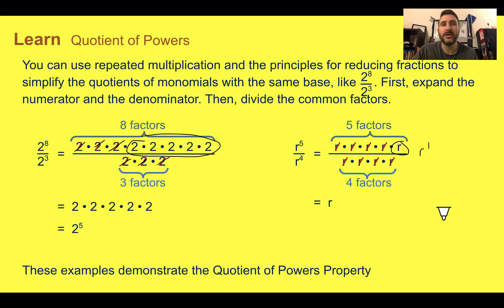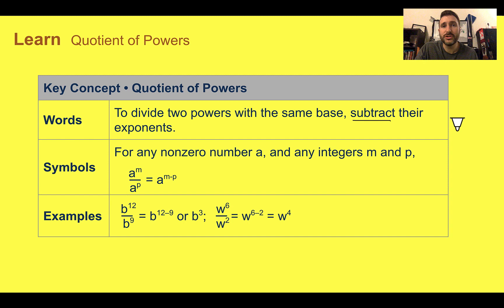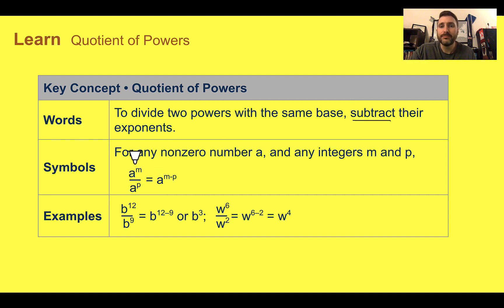Both of these show the quotient of powers property. The key concept is: if you have 2 powers with the same base, you subtract their exponents. So if you can remember that when you're multiplying you add the exponents, division is just the opposite — you're going to subtract. This works for any non-zero number a, since we can't divide by zero, and m and p have to be integers. So b to the 12th divided by b to the 9th would be b to the 12 minus 9, or just b to the 3rd.